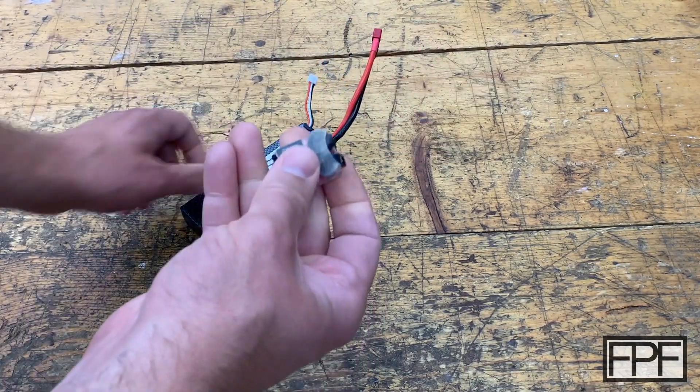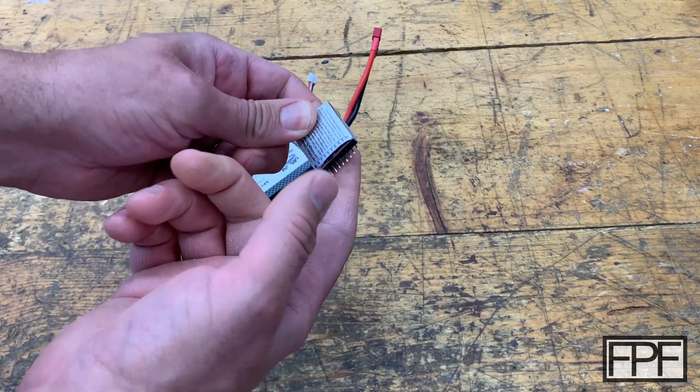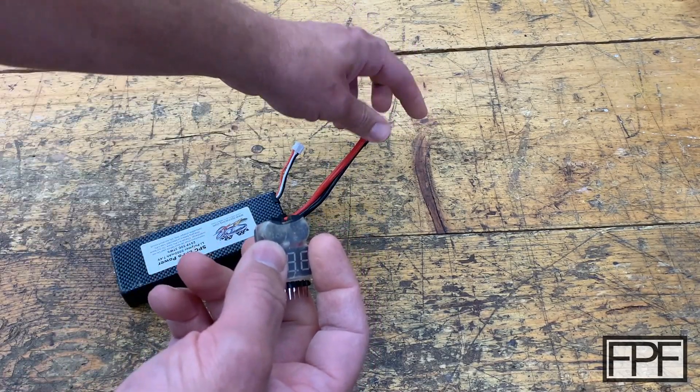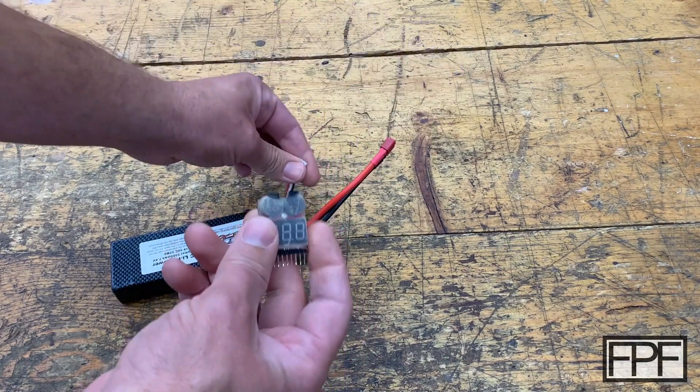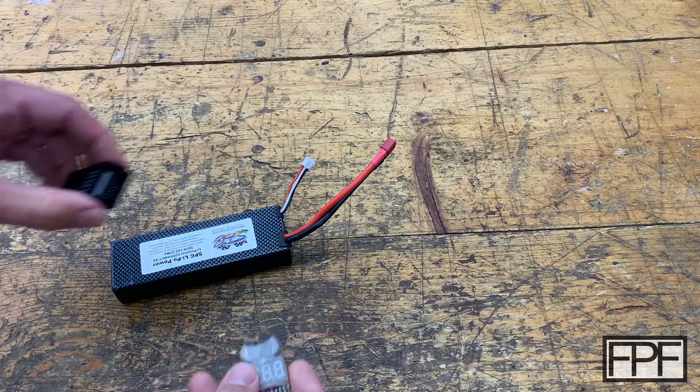So I thought what I really need is just a better way to attach this somewhere on the car. Then this part could stay on the car, put the battery in, connect this to the speed controller, this to the LiPo alarm, and I'm good to go.